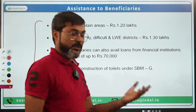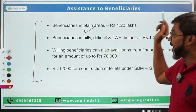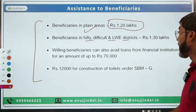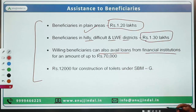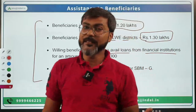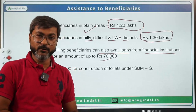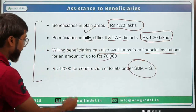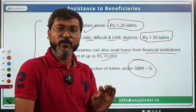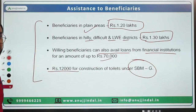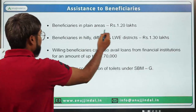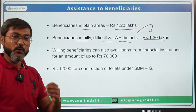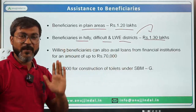Regarding financial benefits: in plain areas, assistance is ₹1.20 lakh; in hilly, difficult areas, and Left-Wing Extremism (LWE) districts, it is ₹1.30 lakh. Beneficiaries can also avail loans up to ₹70,000 from financial institutions. An additional ₹12,000 is provided for construction of toilets under Swachh Bharat Mission Grameen.